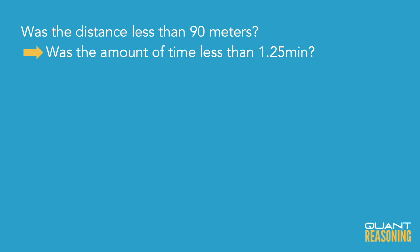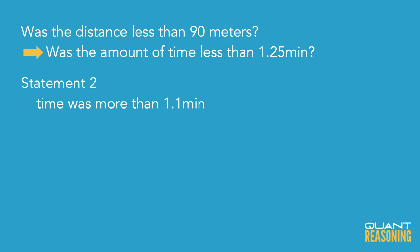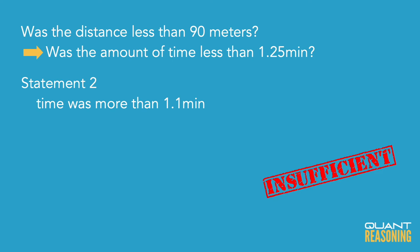Statement 2 tells us the time was more than 1.1 minutes. We wanted to know whether it was under 1.25 minutes, but the problem with 'more than 1.1' is we don't know which side of 1.25 that puts us on — we could be either below or above 1.25. So Statement 2 is not sufficient on its own, and the correct answer is A.